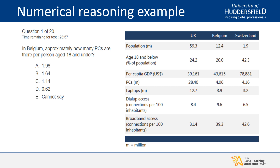Here is a quick example of a numerical reasoning test question. You are given a table with a varied data set and a question challenging your understanding of that table. This is followed by multiple varied questions around that data set, and after three or four questions you'll be moved on to a different data set with new unique questions. This gives you a visual idea of what these questions tend to look like in practice.